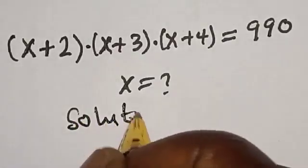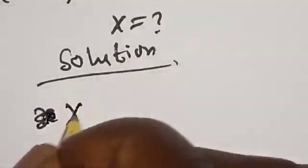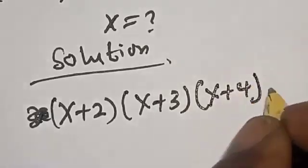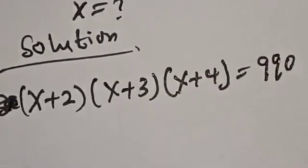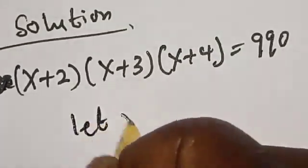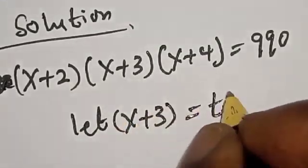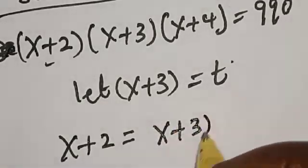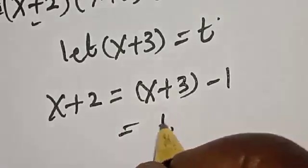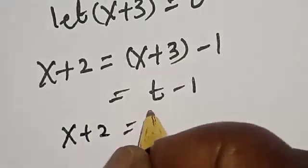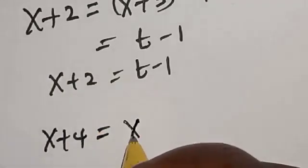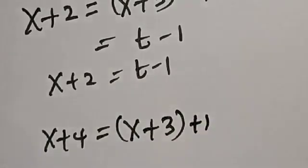Solution. We have the given equation: (s+2)(s+3)(s+4) = 990. Let's start by letting s+3 = t. Now, s+2 will be equal to (s+3) - 1, which equals t - 1. Therefore s+2 = t - 1. Now let's work on s+4 as well: s+4 = (s+3) + 1.